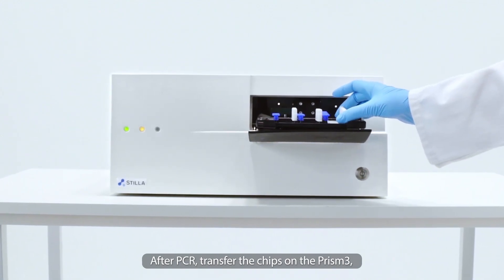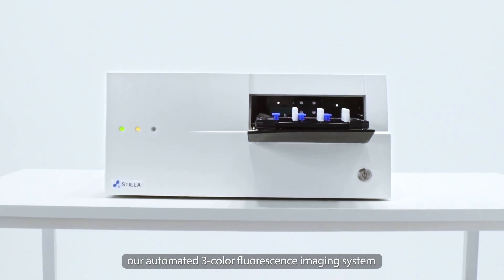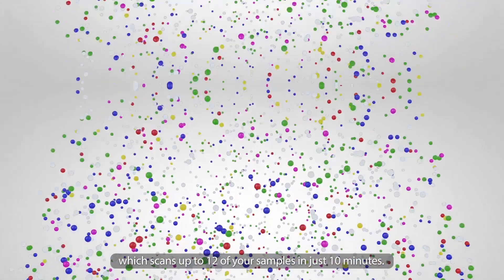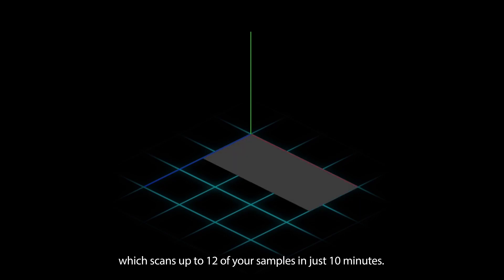After PCR, transfer the chips to the Prism3, our automated three-color fluorescence imaging system, which scans up to 12 of your samples in just 10 minutes.